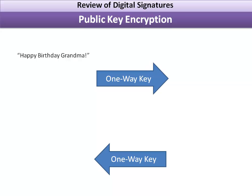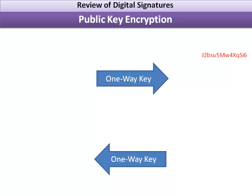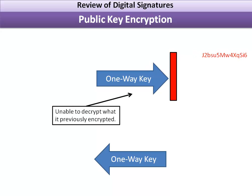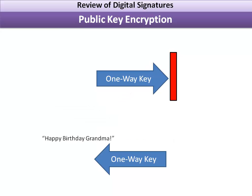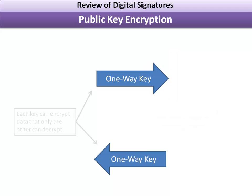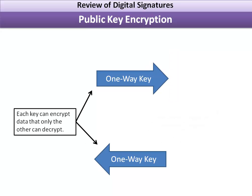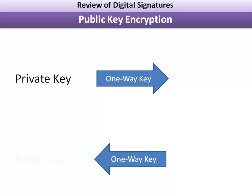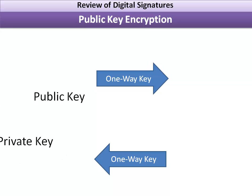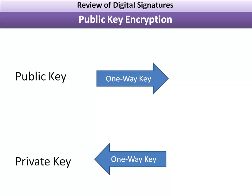The second thing we need to understand is public key encryption. With public key encryption, we take a bit of data, like our message 'happy birthday grandma,' and we send it across a one-way key that will encrypt it. If we wanted to decrypt it using this same key, we can't — we are unable to decrypt what was previously encrypted with a single key. We need to go to the corresponding key, a one-way key that goes in the other direction, and that will decrypt the message. Each of these keys can encrypt data that only the other one can decrypt. One we call the private key and the other the public key — the only difference being the private key remains private and the public key is public.